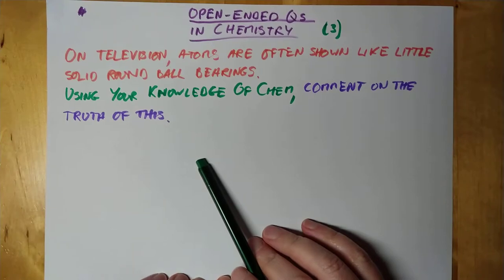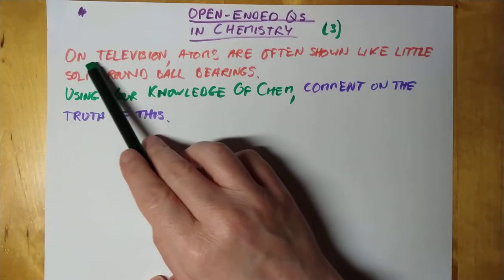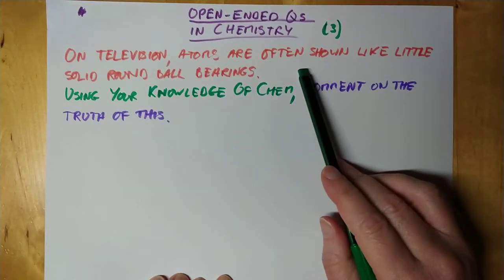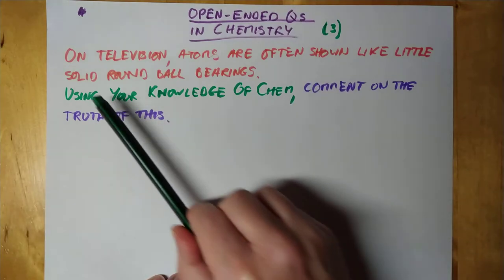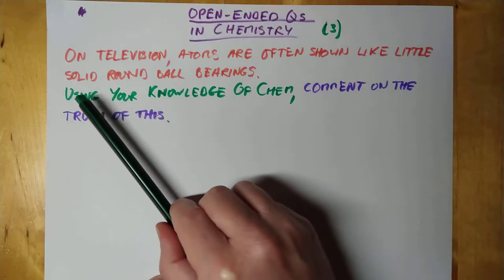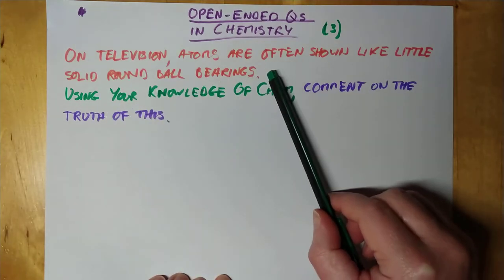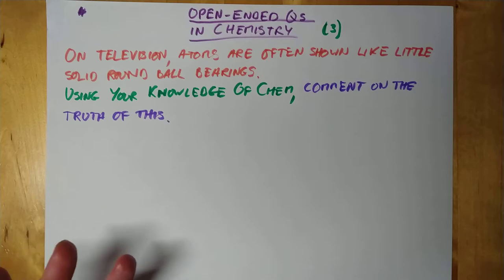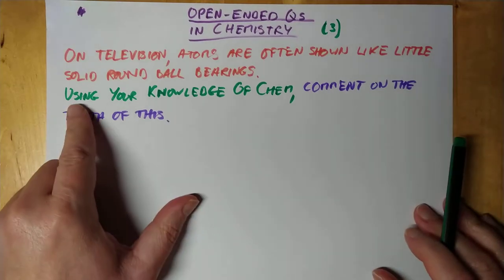Now, let's have a look at this format of these questions. It will say something, or give you a picture, or there will be starter clues. And it says here, on television, atoms are often shown to be like little solid round ball bearings. So there's an opening statement, sometimes more detail than that, sometimes just as much detail as I've shown here today.